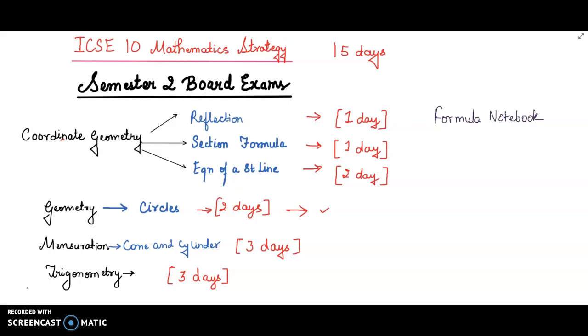Starting with coordinate geometry, you have reflection, section formula, and equation of a straight line. All these chapters are based on formulas, and I would urge you to make a formula notebook if you haven't made it yet. Combine all those formulas, write them for all chapters, and you can revise it one day before your examination so you don't waste time finding formulas for each chapter.